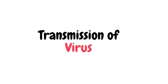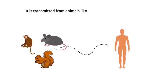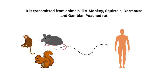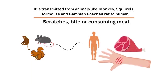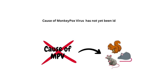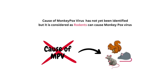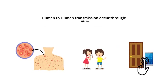This virus can be transmitted from animals like monkeys, squirrels, dormouse, or Gambian pouched rat to humans by scratches, bites, or consuming the meat of any of these animals. The exact reservoir host of monkeypox virus has not yet been identified, but it is thought that rodents may be the cause for the spread of this virus.